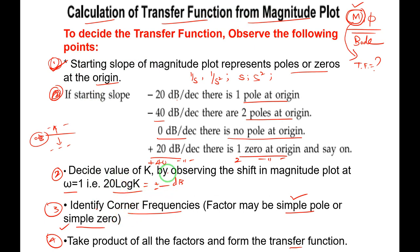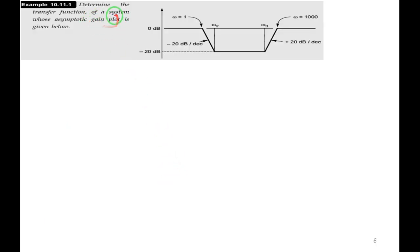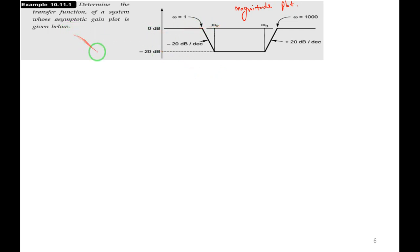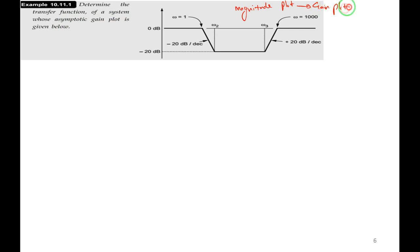Here is the first example. The magnitude plot is given. The problem asks: determine the transfer function of a system whose asymptotic gain plot (magnitude plot) is given.